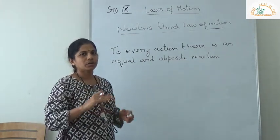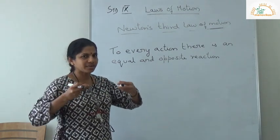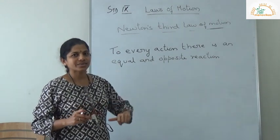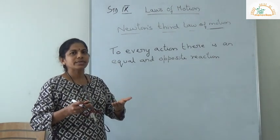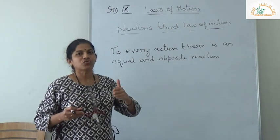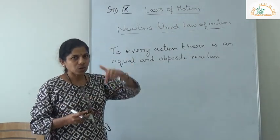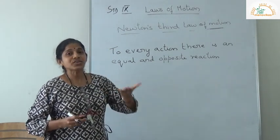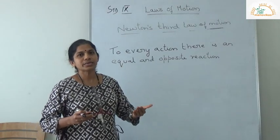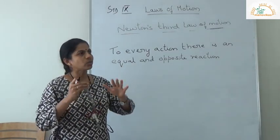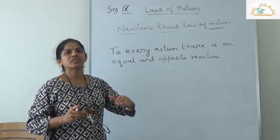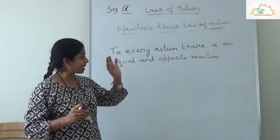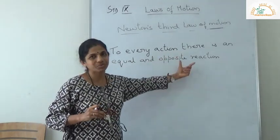For example, there is a book on the table. The book will have certain weight, so the weight of the book will be acting in the downward direction, whereas the table in turn will exert an upward force. So there are two forces — one is the downward force due to the weight of the book, and the upward force is the reaction force exerted by the table. You have the book and you have the table, so there are two objects on which these equal and opposite forces are acting.